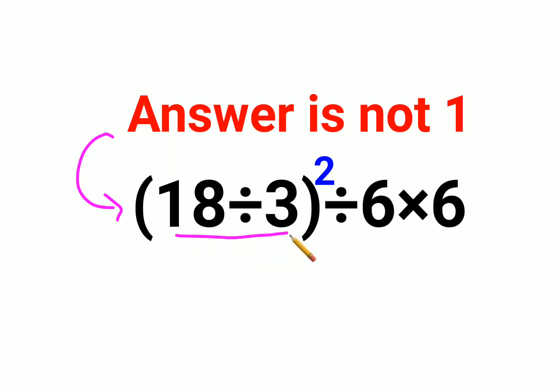The question is 18 divided by 3, the whole squared, divided by 6 times 6. First let's understand: in BODMAS what we do is we first do the bracket. So 18 divided by 3 is 6.